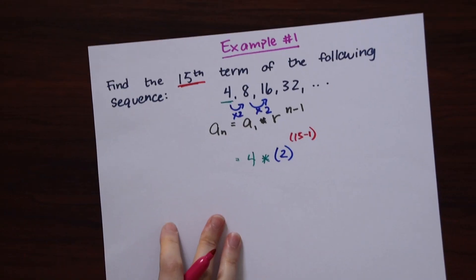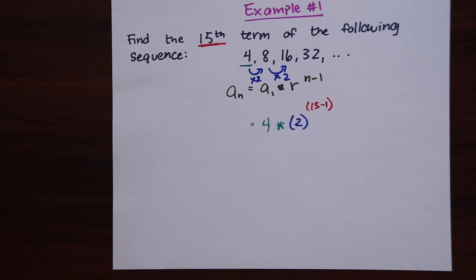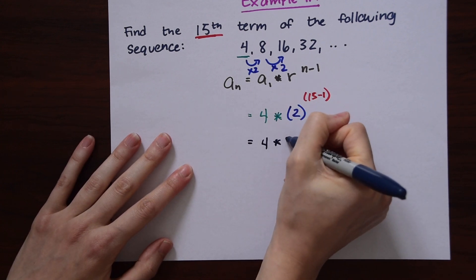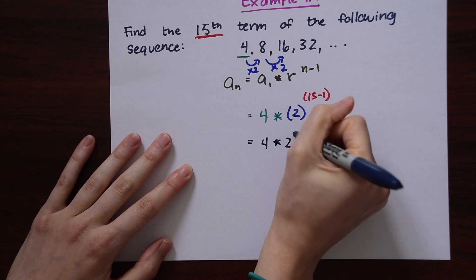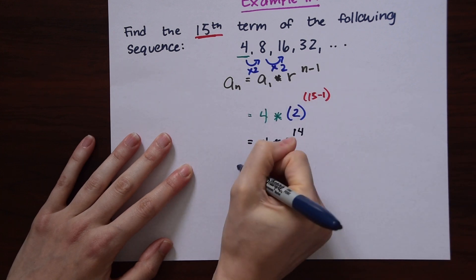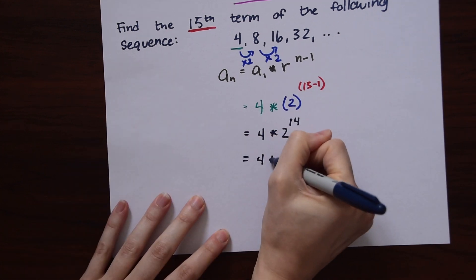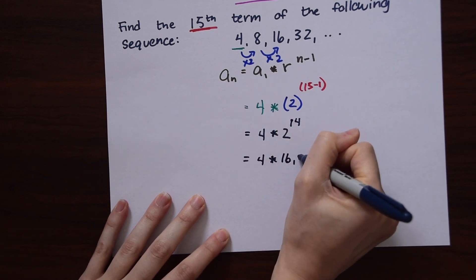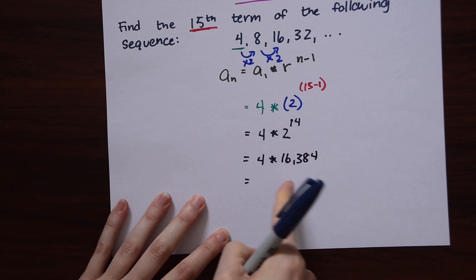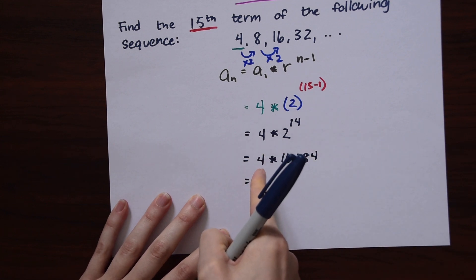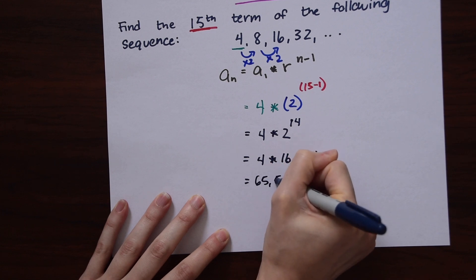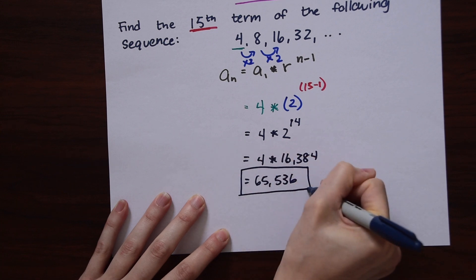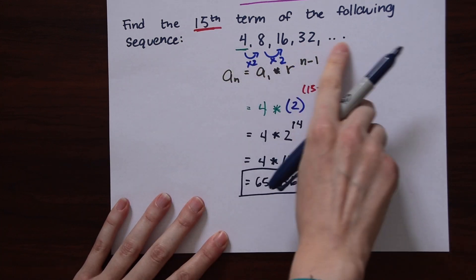So now we can solve this using a calculator. This simplifies to 4 times 2 raised to the 14th power. 2 to the 14th power is 16,384, and then 16,384 times 4 is equal to 65,536. And that's our answer — the 15th term of this sequence.